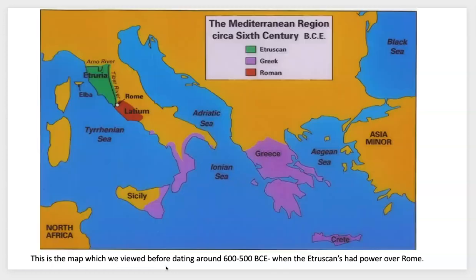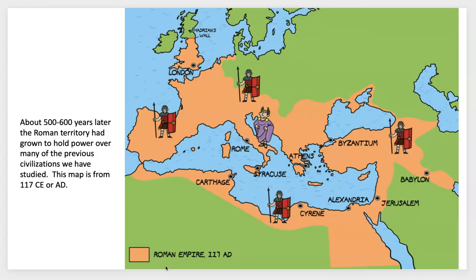Just as a reminder of where we've come from: this is a map we viewed before, looking at Etruscan, Greek, and Roman cultures around the sixth century when the Etruscans still had power over Rome. Moving on to a map I found showing the Roman Empire around 117 AD CE — about five to six hundred years later.